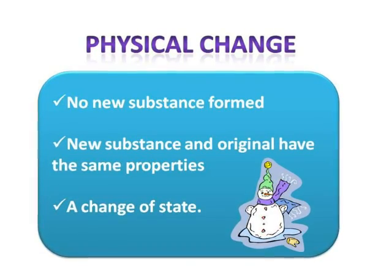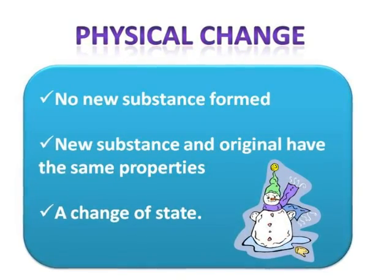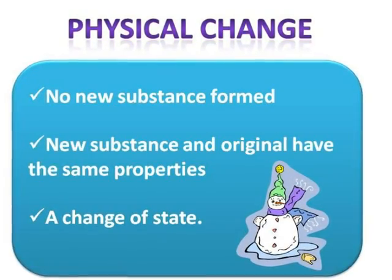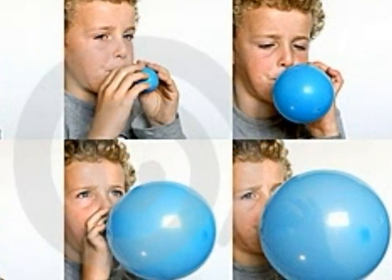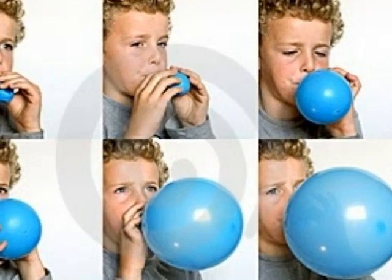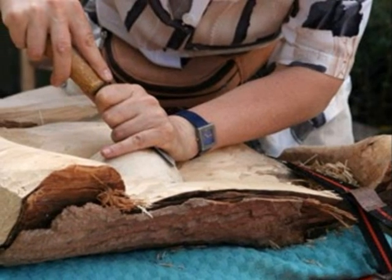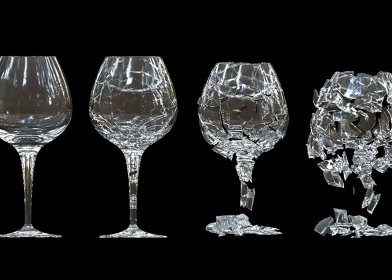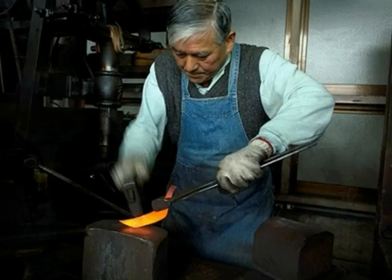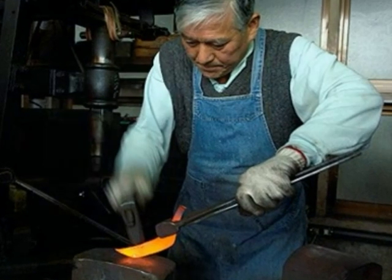Unlike chemical changes, physical changes do not form new substances. The substance has the same properties as the old one and there is only a change of state. For example, a child blowing up a balloon only changes its shape. Shaping wood into a specific shape doesn't change the wood at all. Broken glass is still glass. Banging heated metal to make things is still metal. And melted ice is still water.